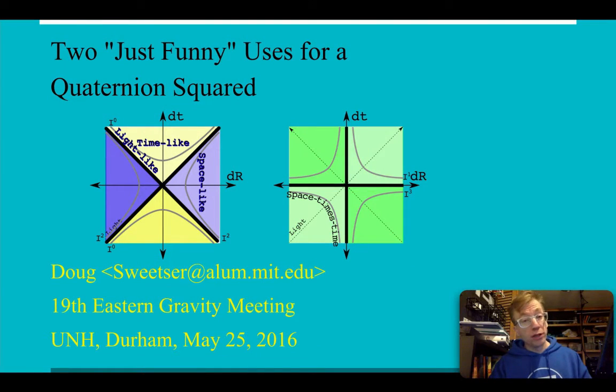Hello, I'm Doug Sweetser and this is a talk I gave titled, Two Just Funny Uses for a Quaternion Squared. You see graphics for those two. One should look very familiar. It is the light cone from special relativity. We've got these lines of invariant intervals. And then we've got this graph in green. What's that?